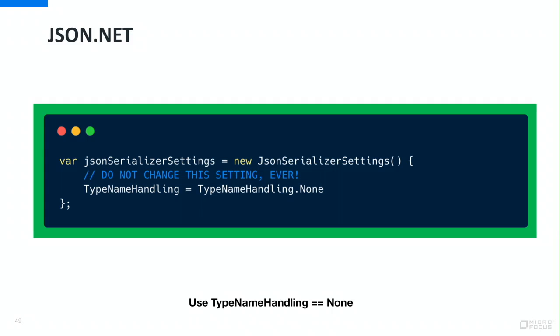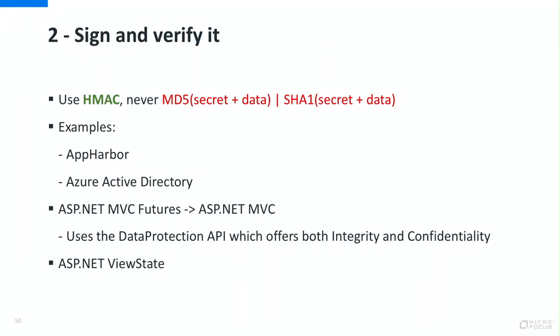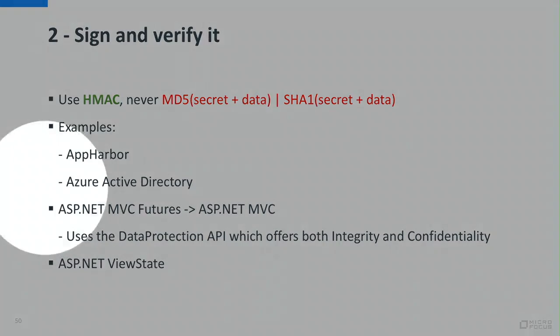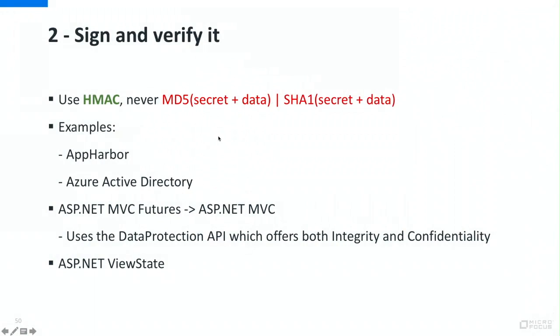I think it's a good idea to explicitly set these secure values and add a comment like 'do not change this, please.' What if you really need to serialize data? If you have an object graph you want to persist on the client side and you're not expecting the client to modify it, then sign it and verify the data hasn't been modified. Always use an HMAC and never use something like MD5 or SHA-1 with secret and data because that's vulnerable to hash length extension attacks.